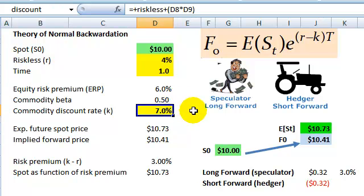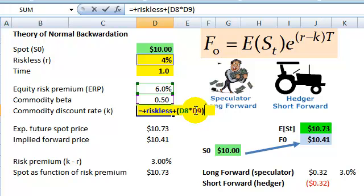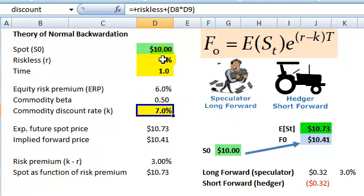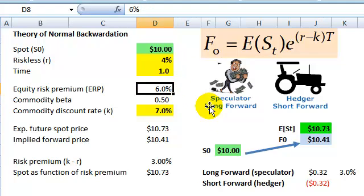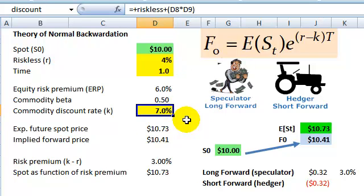Now the commodity discount rate then just applies the capital asset pricing model, the riskless rate of 4% plus beta times the risk premium of 6% is 4% plus 3%. So our commodity discount rate is 7% as higher than the riskless rate, just reflects the idea here that this commodity has risk, it's not risk-free.